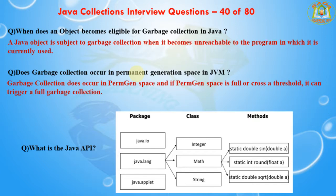The next question is: what is the Java API? The Java API is a large collection of ready-made software components that provide many useful capabilities such as graphical user interfaces and widgets.